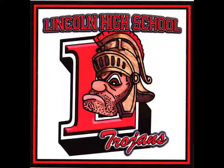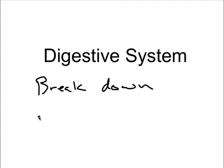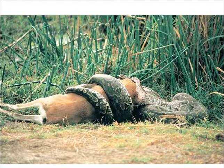Back to the lecture at hand: the digestive system. The biggest point of the digestive system is really twofold. The first thing is to break down food, drinks, or anything we take into our body — but the purpose is not just to get rid of it, but to absorb the nutrients so we can use those nutrients for different parts and processes in our body.